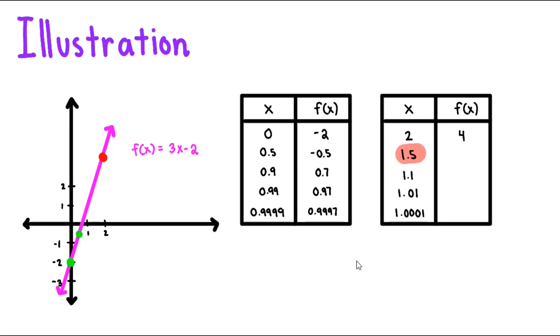At 1.5, f of x becomes 2.5. With the same idea, we'll have this. As you can see, these are the points for these two and these two are the points for these two.